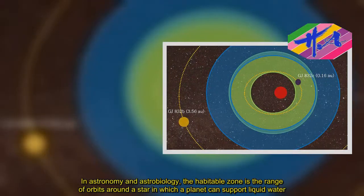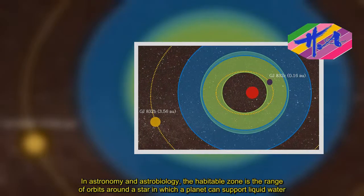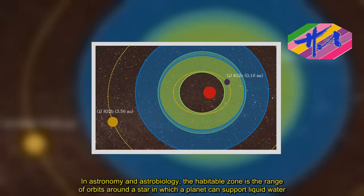In astronomy and astrobiology, the habitable zone is the range of orbits around a star in which a planet can support liquid water.